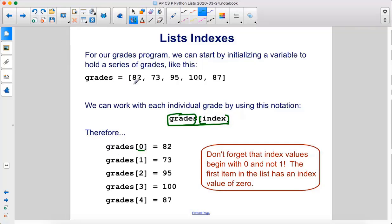So, therefore, grades zero would be 82, grades one would be 73, grades two is 95, grades three is 100, grades four is 87. And don't forget that index values begin with zero, not one. The first item in the list has an index value of zero. This is very important.